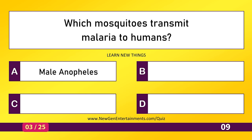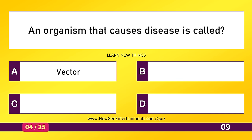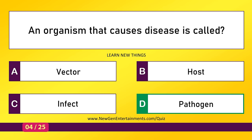Which mosquitoes transmit malaria to humans? Female Anopheles. An organism that causes disease is called a pathogen.